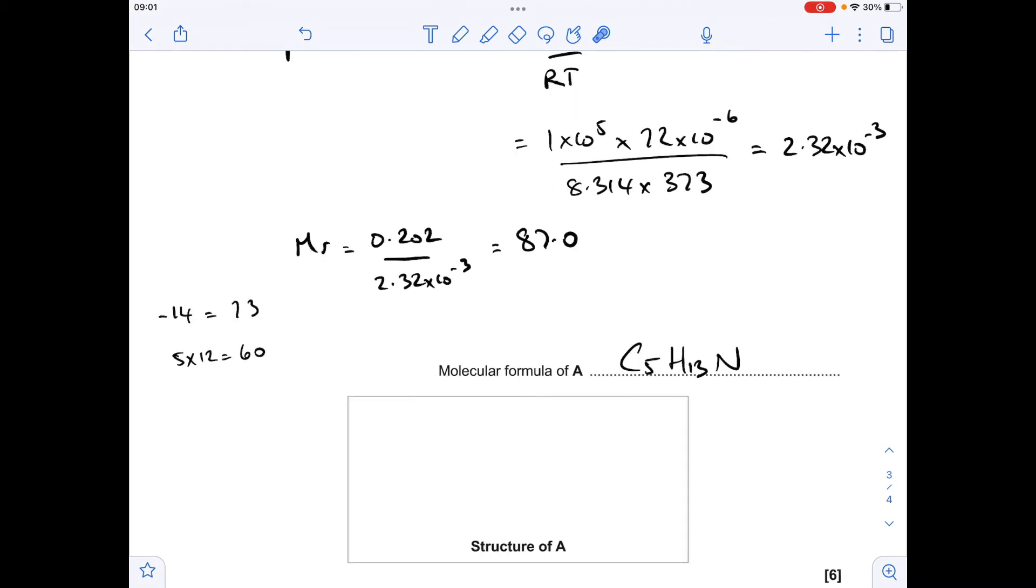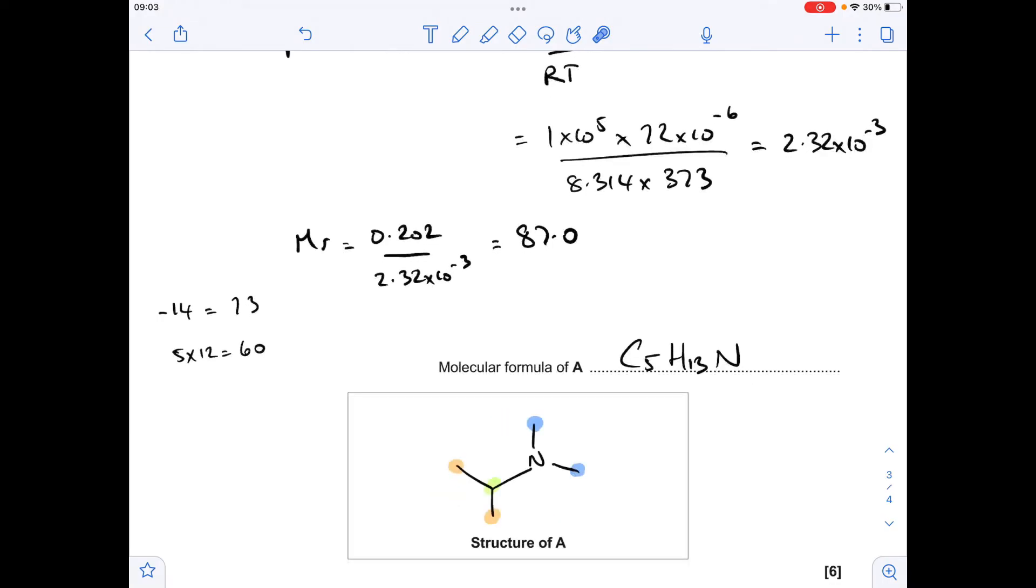There are five possible structures for A. I'll go through each one and explain the carbon-13 NMR. One possible structure: three equivalent carbons for these methyl groups, another one here, then this one - one, two, three carbon environments. Next one's this one: one, two, three environments. Then this one here, and finally this one here.